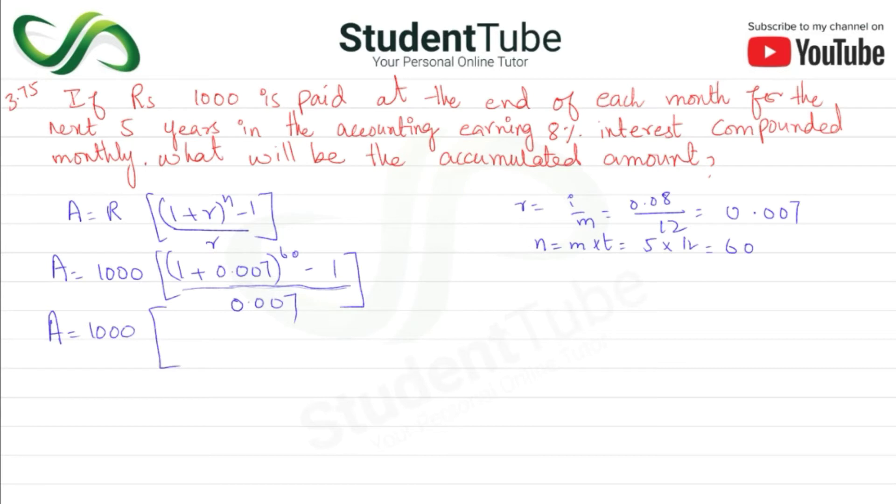A is equal to 1000. After adding and raising to the 60th power, we get 1.519736 minus 1, divided by 0.007. After dividing, we get 74.248. Multiplying both, our answer is 74,248.